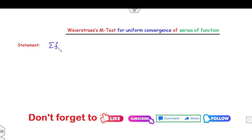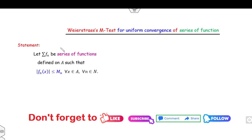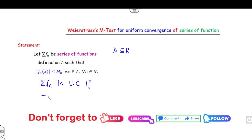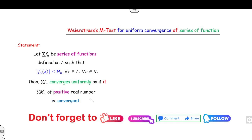So what is the Weierstrass M test for uniform convergence of a series? Suppose you have an infinite series where f_n is a series of functions defined on domain A, a subset of ℝ, such that the absolute value of f_n is less than or equal to M_n. Then the series f_n is uniformly convergent if the series M_n is convergent.